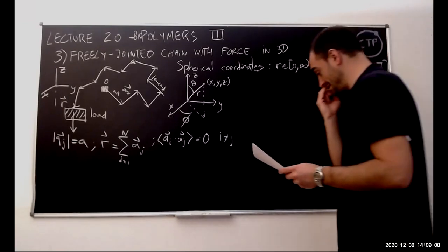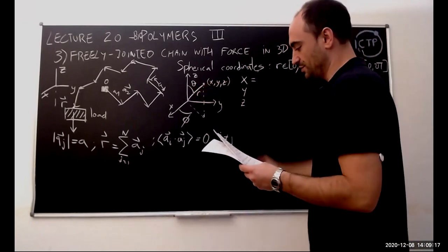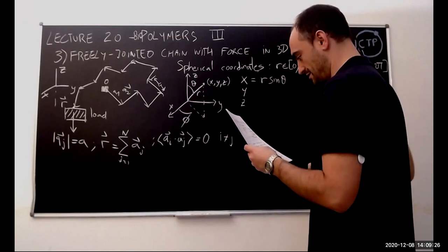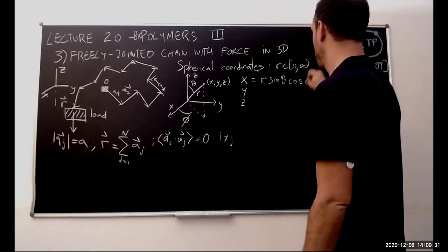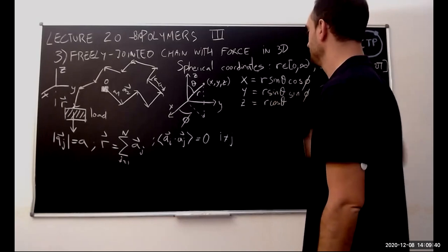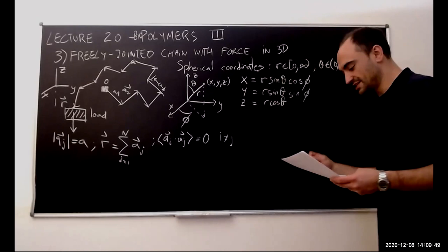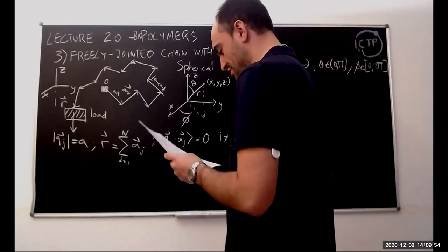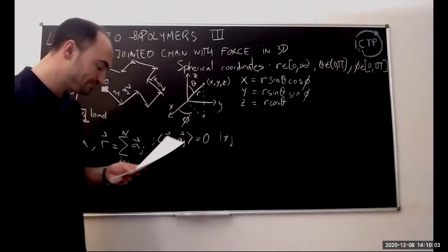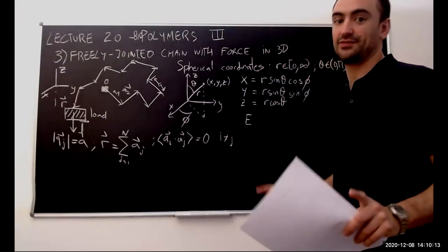From spherical coordinates: x equals r sine theta cosine phi, y equals r sine theta sine phi, and z equals r cosine theta. This is how we convert from spherical to Cartesian coordinates. Now, there is a force on the polymer pointing only in the z direction, which generates an energy for each configuration.